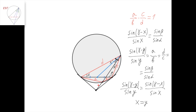This line being a simmedian in this triangle means that if we take the tangent lines to the circle at this vertex and this vertex, and we intersect them at this point, then this point, this point, and this point lie on a straight line.